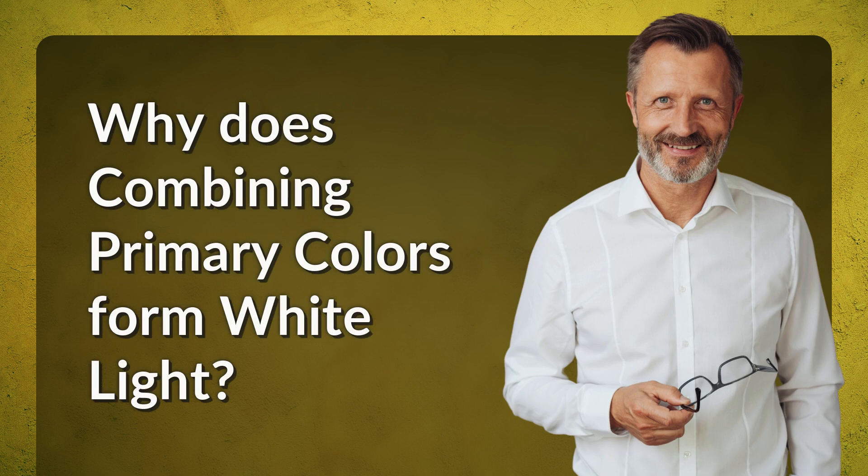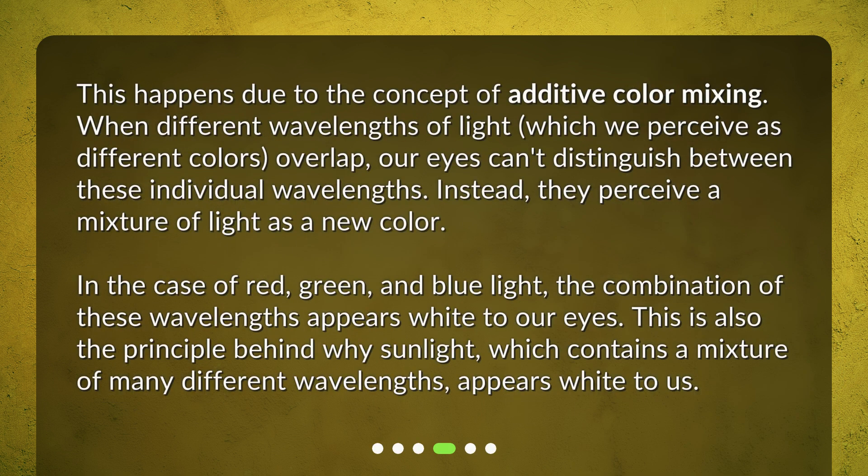Why does combining primary colors form white light? This happens due to the concept of additive color mixing. When different wavelengths of light, which we perceive as different colors, overlap, our eyes can't distinguish between these individual wavelengths. Instead, they perceive a mixture of light as a new color.